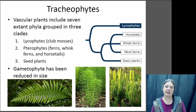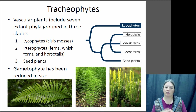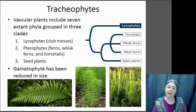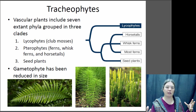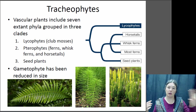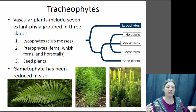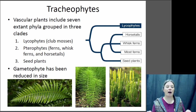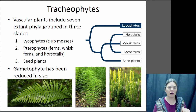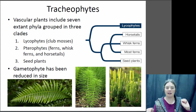The vascular plants in general are sometimes referred to as the tracheophytes — 'trachea' refers to those tube-like systems. Within the vascular plants there are three major groups: you've got your lycophytes, which are your club mosses; you've got your pterophytes, which are your ferns and horsetails; and then you've got your seed plants, which we'll talk about in the next lecture. So let's talk a little bit more about the lycophytes and the pterophytes.